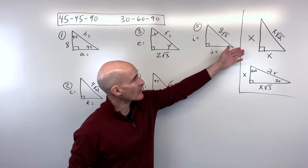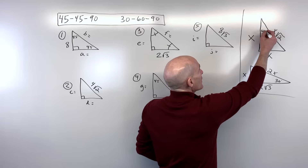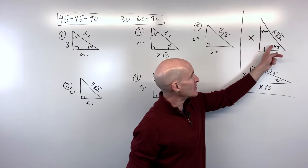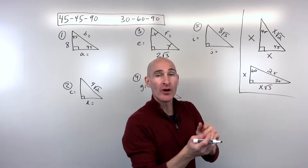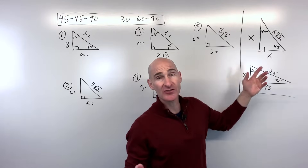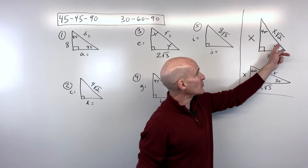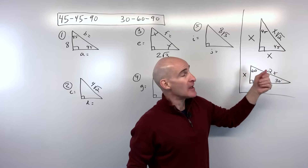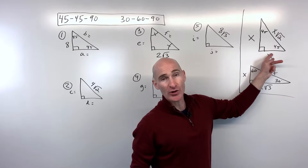The first thing we want to talk about is the 45-45-90 triangle. What you notice here is that it's an isosceles triangle — these base angles are congruent. That means the two legs that make up the right angle are going to be congruent as well, so we refer to those sides as x and x. To get to the hypotenuse — the side across from the right angle — you take that leg and multiply by the square root of 2. If you're going from the hypotenuse to the leg, you divide by the square root of 2.